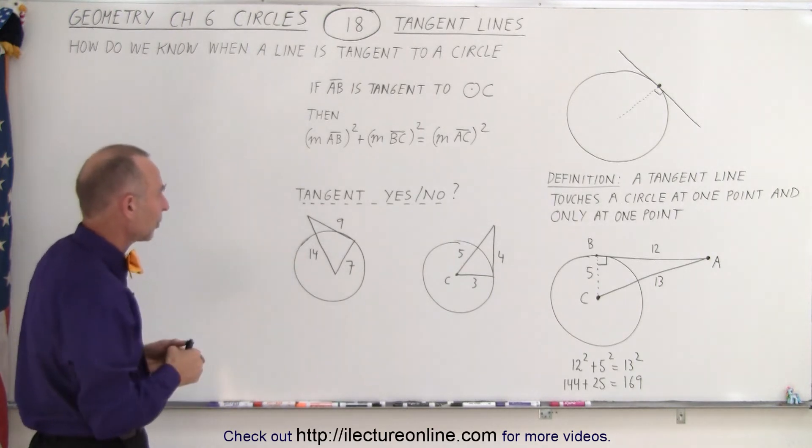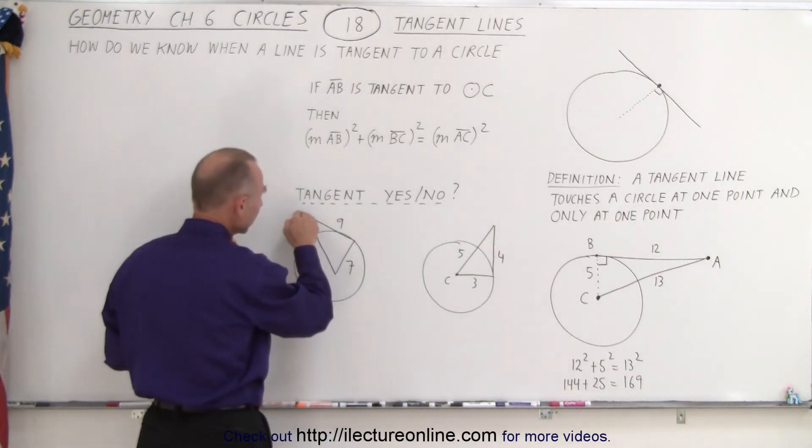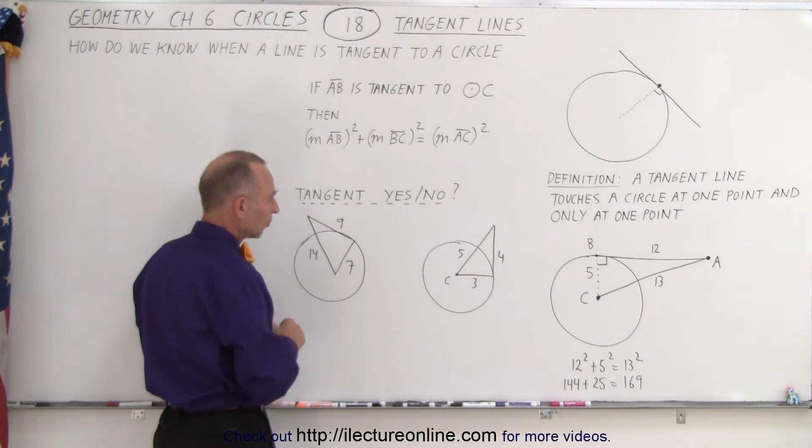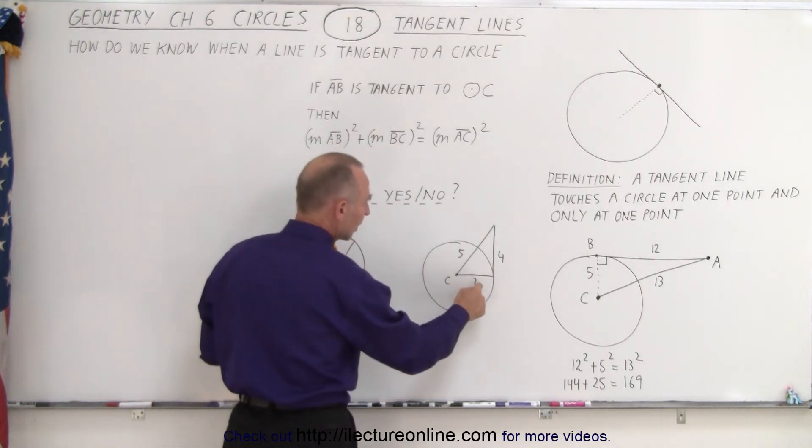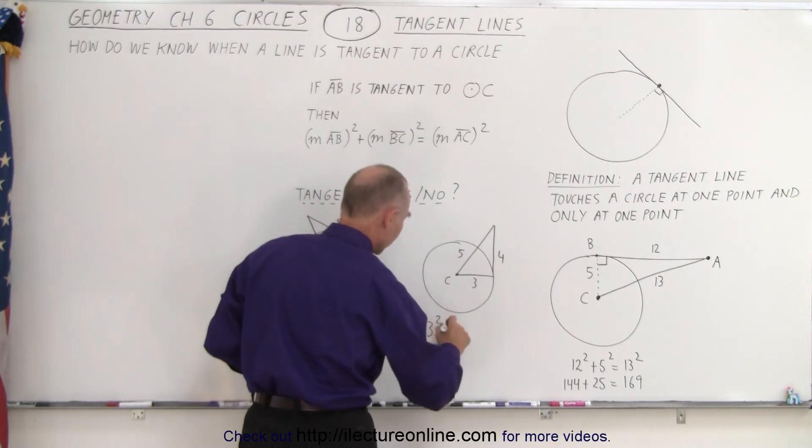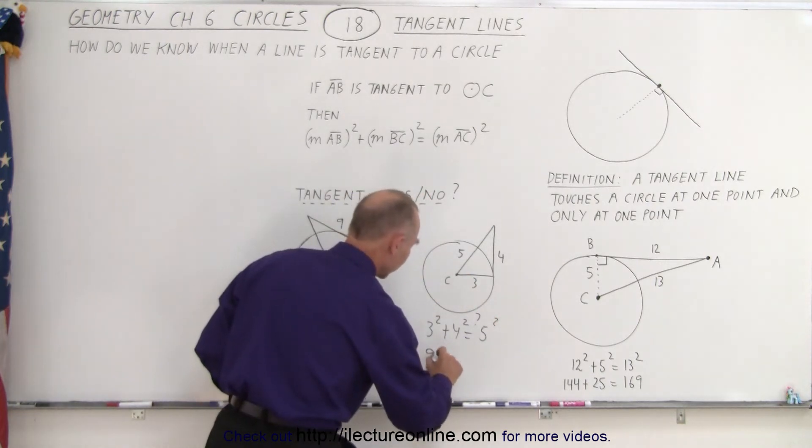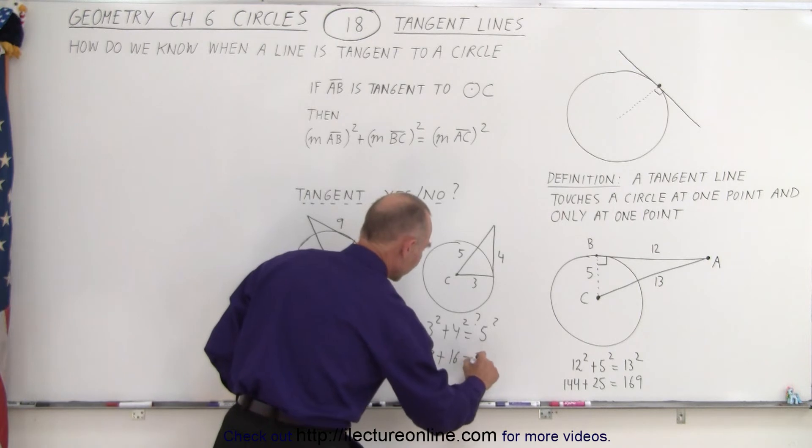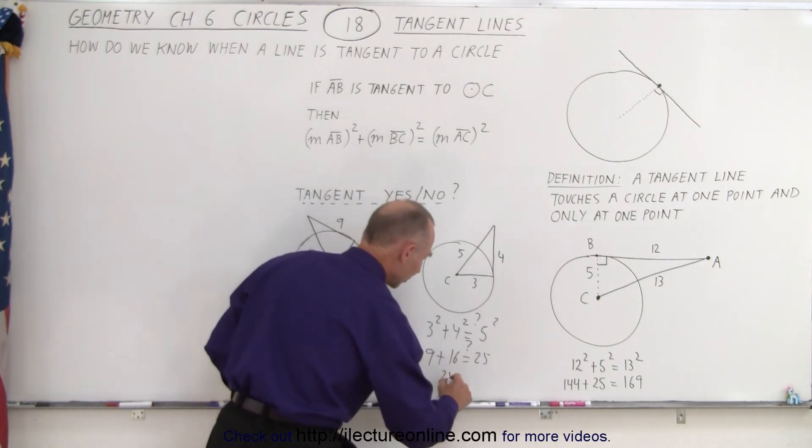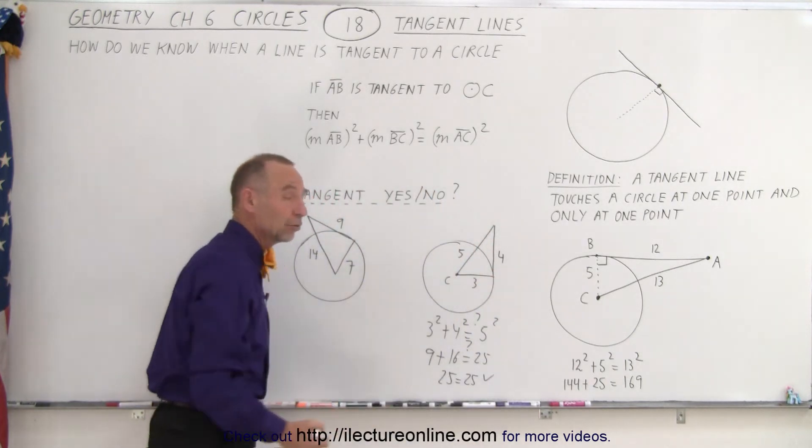So here we have two examples, and we need to determine whether or not the line here is tangent to the circle, and the line here is tangent to the circle. So they've given us the measures of the lines, this is 3, this is 4, this is 5, so we know the radius of the circle is 3, and so what we do here is we take 3 squared plus 4 squared, and that should equal the diagonal 5 squared, so that's of course question mark. And so we end up with 9 plus 16 equals 25, question mark, and the answer of course is yes, 25 does equal 25, so that's how we know the line here is tangent to the circle.